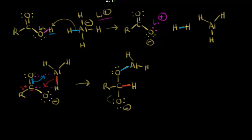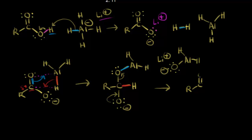If we take these electrons and move them in to form our double bond, we would have to push these electrons off onto our oxygen, so the oxygen bonded to aluminum would now have three lone pairs of electrons giving it a negative one formal charge — and the lithium is probably going to bond to this oxygen. We just reformed our carbonyl. The electrons in green on this oxygen move in to form our carbonyl, and the hydrogen in red is this hydrogen, so we form an aldehyde.